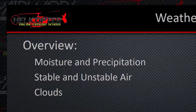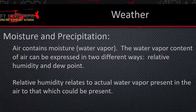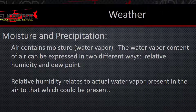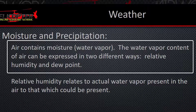Today we're going to talk about moisture and precipitation, stable and unstable air, and then we're going to finish up with clouds. Air contains moisture or water vapor. The water vapor content of air can be expressed in two different ways: relative humidity and dew point.